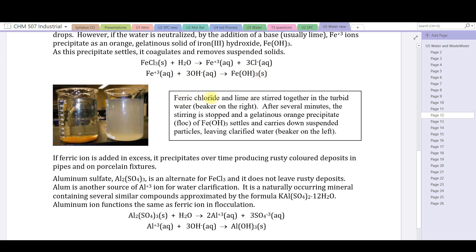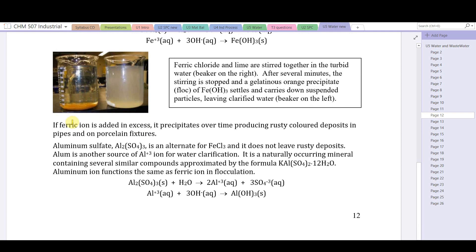Ferric chloride and lime are stirred together in the turbid water - see the beaker on the right, this is clay suspended in water. We mix it with some ferric chloride. After several minutes the stirring is stopped and a gelatinous orange precipitate floc of ferric hydroxide settles and carries down suspended particles, leaving clarified water. That's the beaker here on the left. It's quite dramatic to watch.